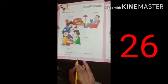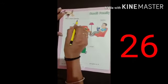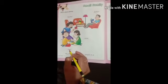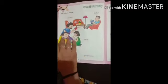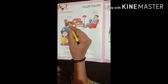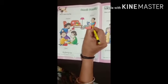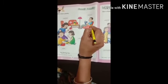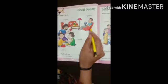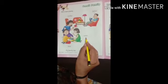Now, page number 26. This is Sam's family. This is his mother. This is his father. This is his sister.